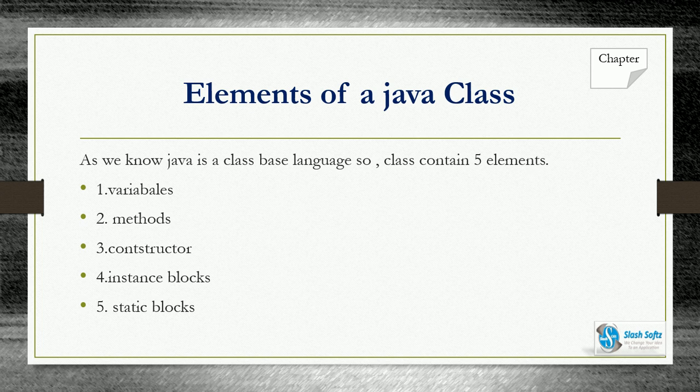We normally find the following elements inside a class: variables, methods, constructors, instance block, static block, and so on.